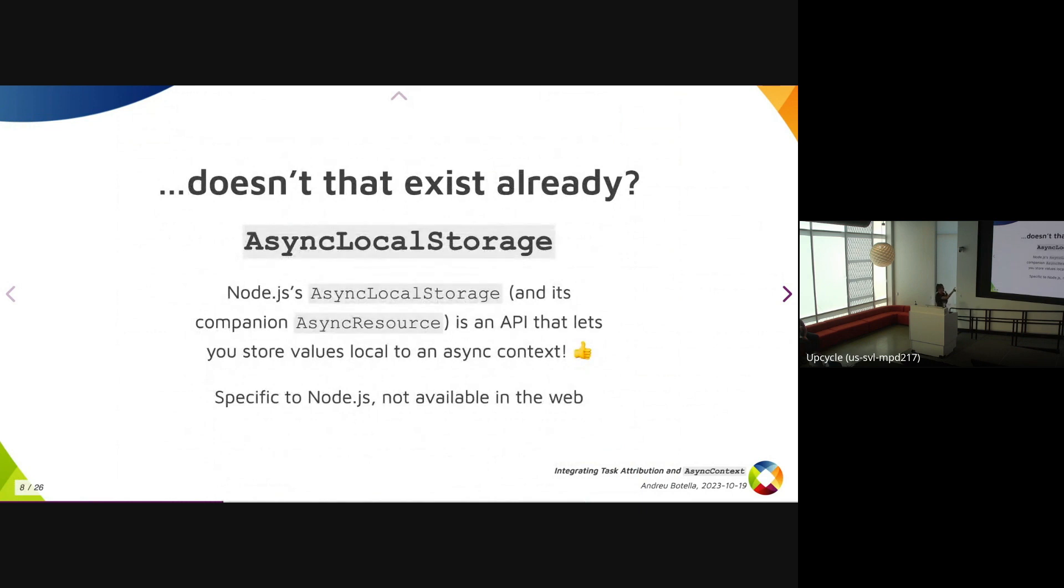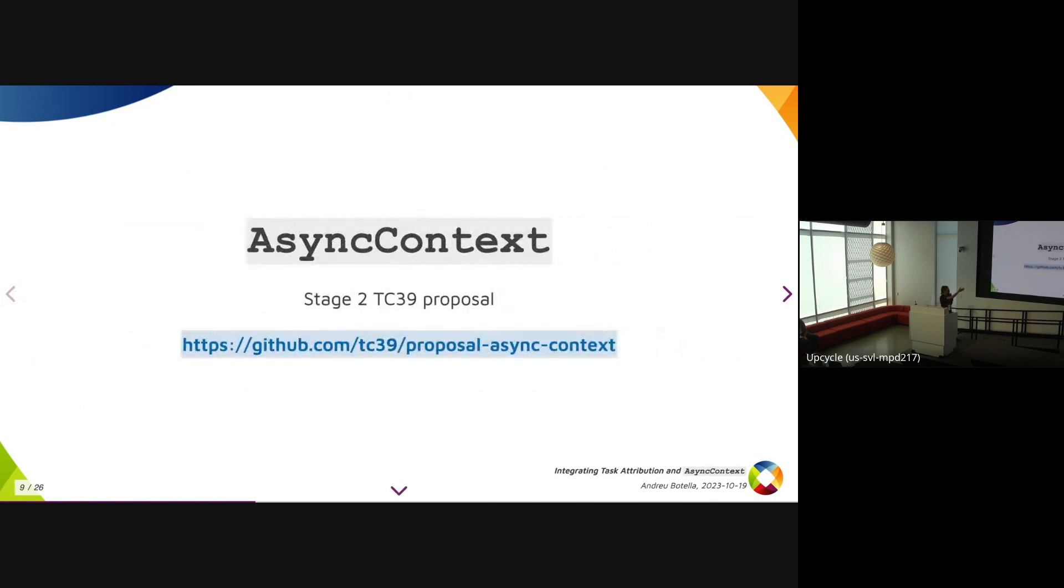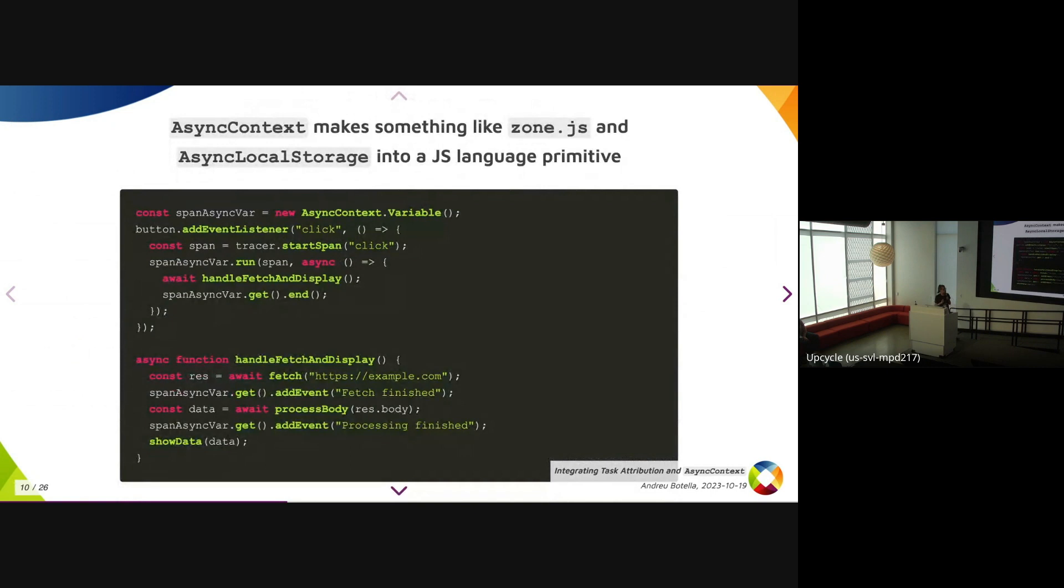There is AsyncLocalStorage in Node.js and together with its companion AsyncResource. It does let you store values which are local to an async context. And this is great. This is exactly what we want, but this is specific to Node.js and it's not available in the web. So that's what AsyncContext is meant to solve. This is a stage two proposal. And it makes something like Node.js AsyncLocalStorage into a JavaScript language primitive. So here you see that we're creating an AsyncContext.Variable and using it as the span.